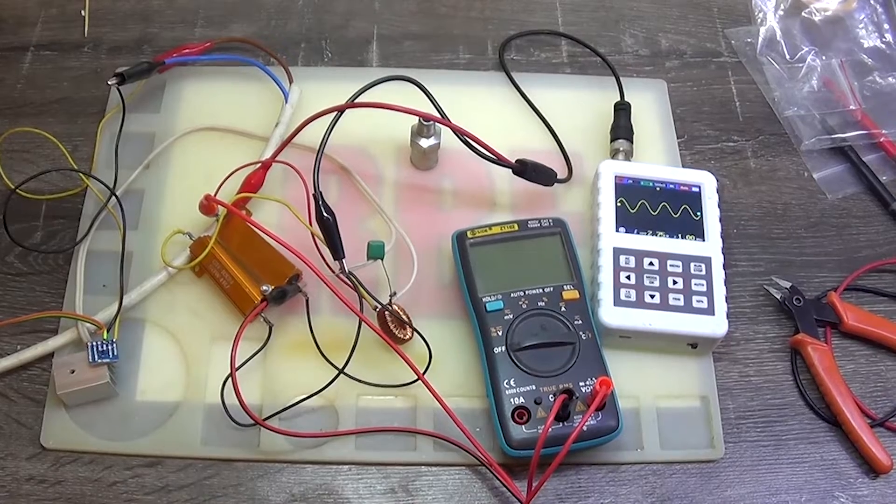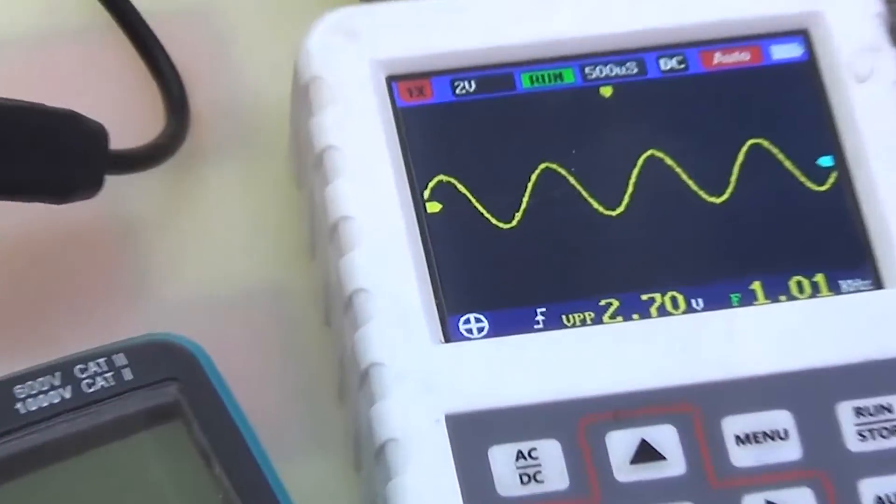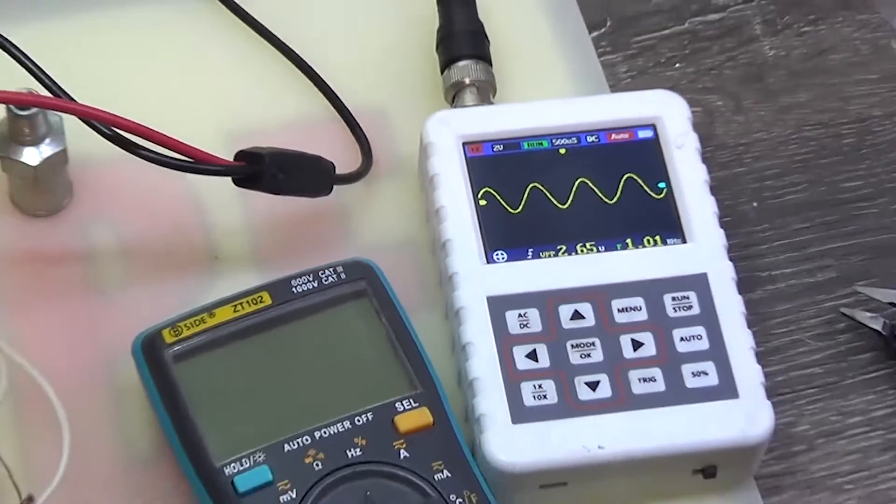And now the output is a purest sine wave. No D-class carrier frequency noise, as if it were a good AB-class.